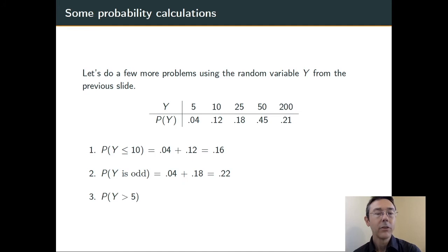Finally, let's do the probability that Y is greater than 5. We could do this the same way. We could add up the probability that Y is 10, 25, 50, and 200. But there's a shortcut here. Namely, instead of looking at the probability that Y is greater than 5, let's look at the probability that Y is not greater than 5. Those two things have to add up to 1.